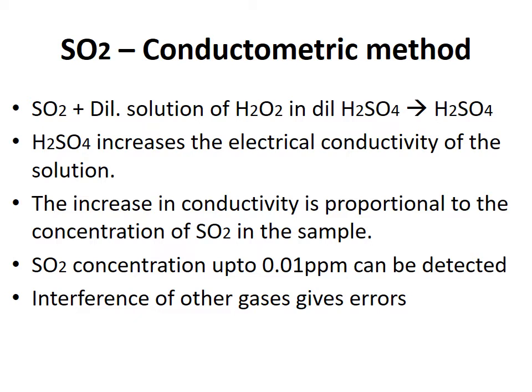The next method for SO₂ analysis is the conductometric method. The sampled air containing sulfur dioxide is passed through a dilute solution of hydrogen peroxide in dilute sulfuric acid. The SO₂ is oxidized to H₂SO₄, thereby increasing the electrical conductivity of the solution. The increase in conductivity is proportional to the SO₂ concentration, and as low as 0.01 ppm can be detected. However, this method suffers from a wide variety of interferences due to other gases, which can introduce error.